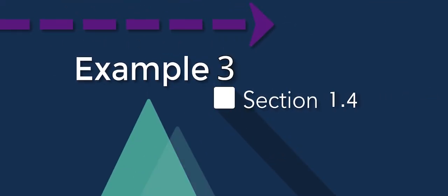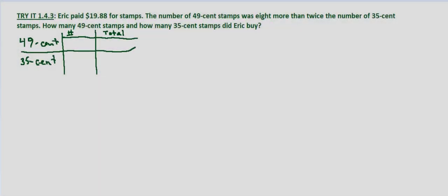In this problem we're looking at different priced stamps. We're told that Eric paid $19.88 for his stamps and that the number of 49-cent stamps was eight more than twice the number of 35-cent stamps. How many 49-cent stamps and how many 35-cent stamps did Eric buy?